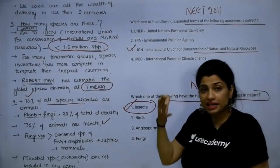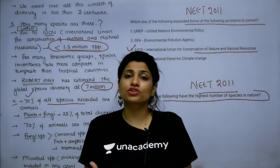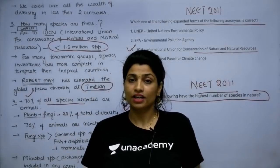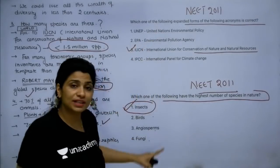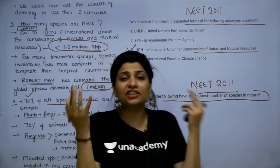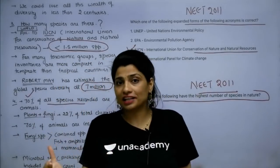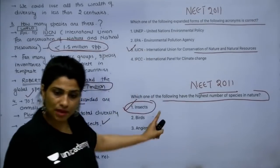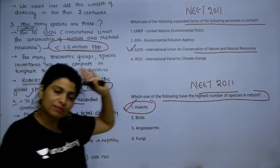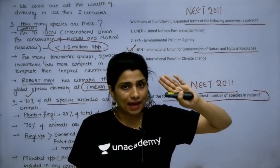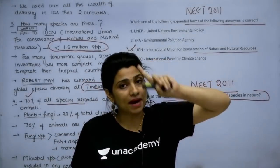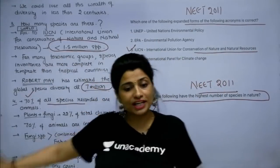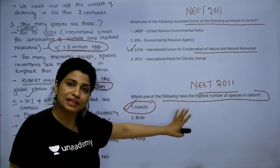Sometimes you will find 5 to 6 past year questions from a single topic. If you don't write the PYQs, how will your brain train? The steps so far: first make a flow chart and a mind map, then make detailed notes, and in the detailed notes add past year questions with full detail.